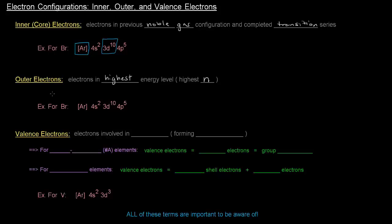So keeping with that example for bromine, the highest energy level is 4. So the outer electrons in this case are these 4s2 electrons and these 4p5 electrons, because the highest n value here is 4. So all those electrons are considered the outer electrons. It's got 7 outer electrons there.